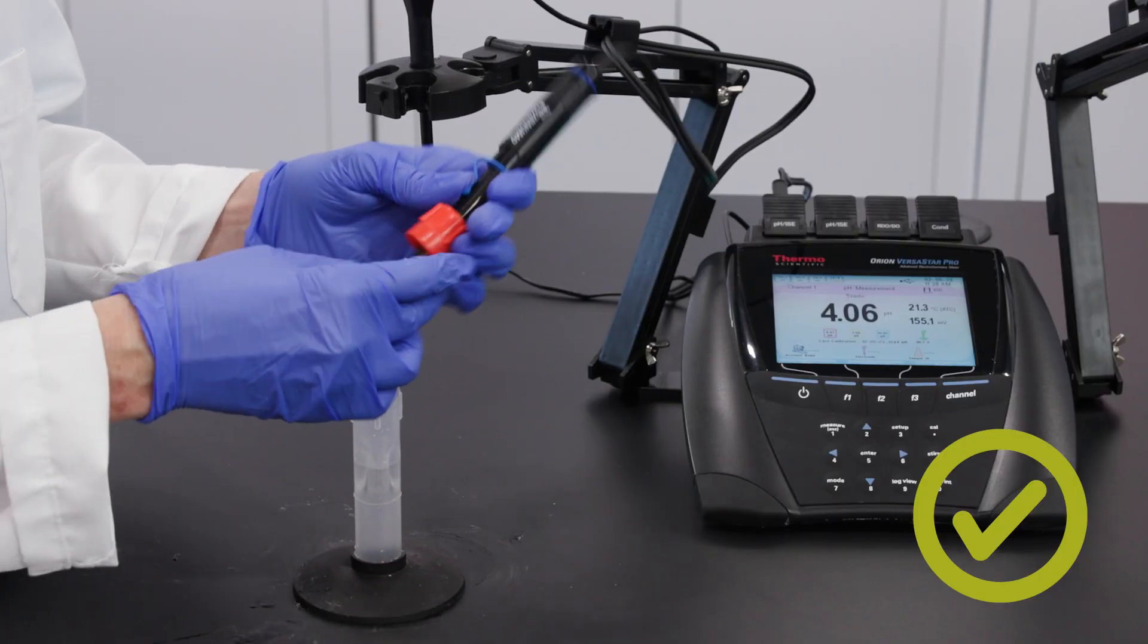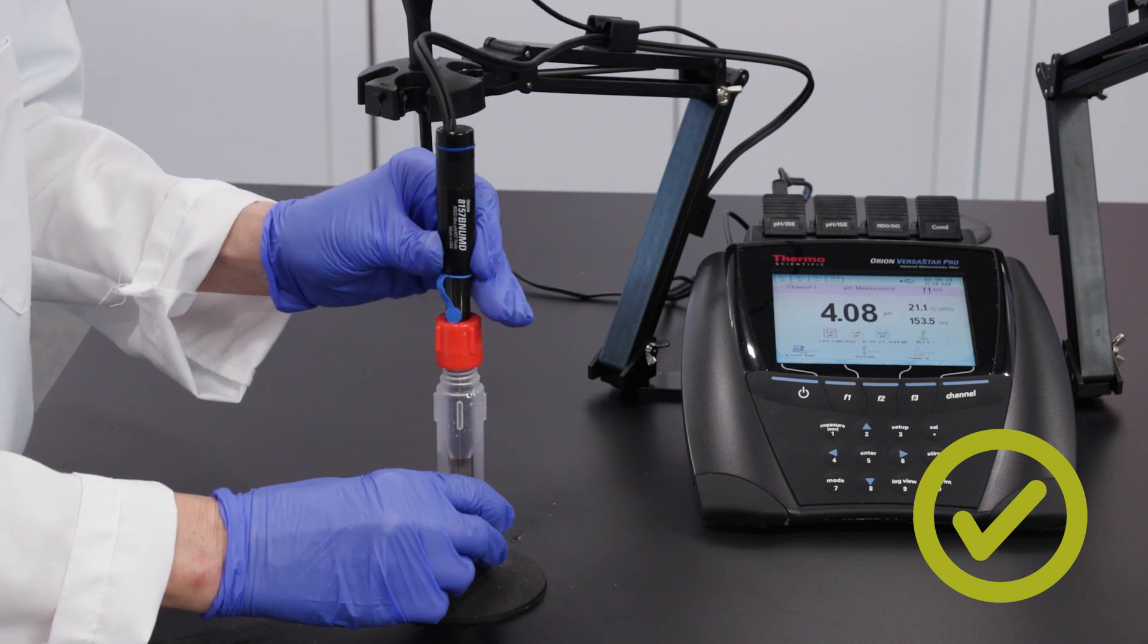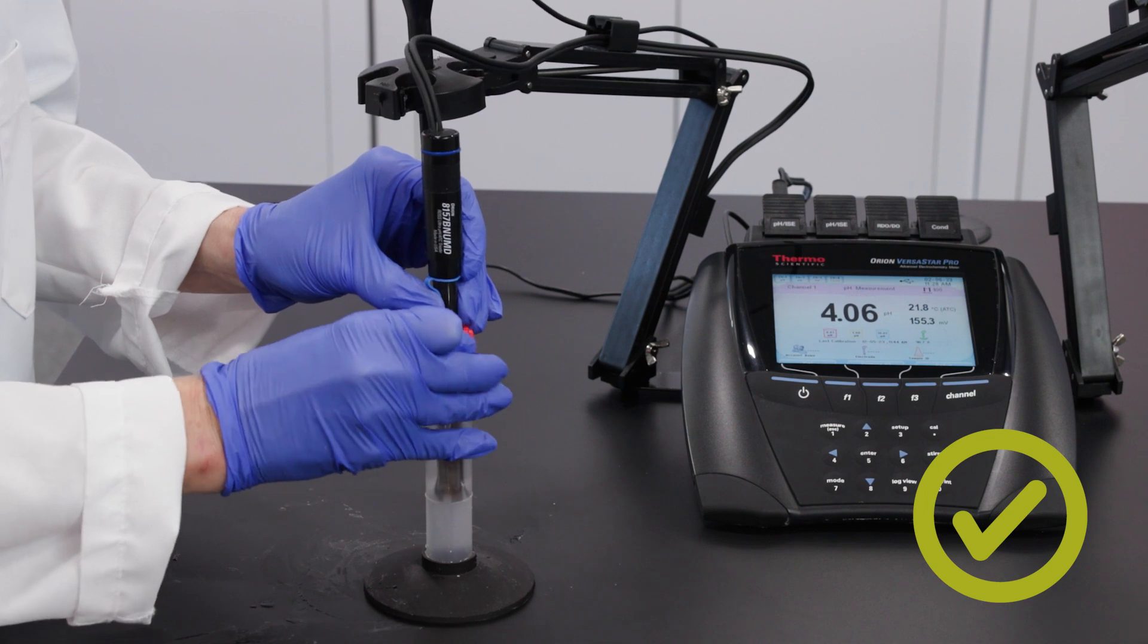To avoid these issues, use a specialized pH electrode storage solution, close the fill hole before storing, top up the fill solution, and ensure no crystals are formed inside.